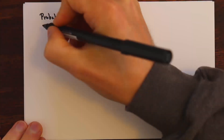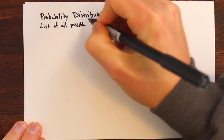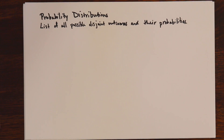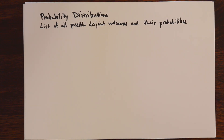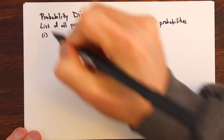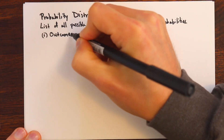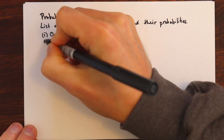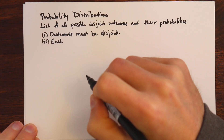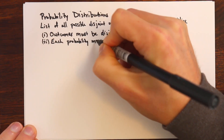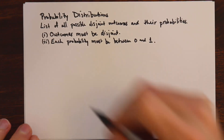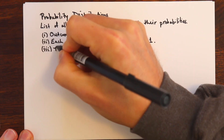Next we're going to spend some time talking about probability distributions. A probability distribution is a list of all possible disjoint outcomes and their probabilities. A probability distribution must satisfy three different rules: first, the outcomes must be disjoint; second, each probability must be between zero and one; and lastly, the total of the probabilities must equal one.